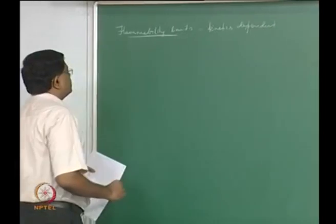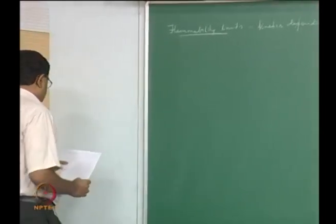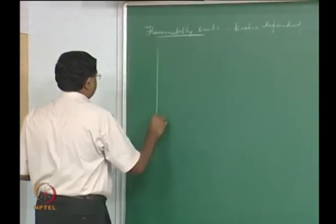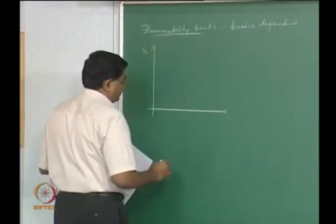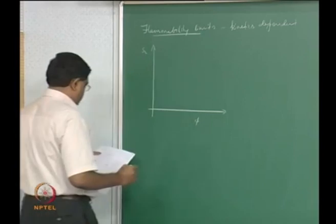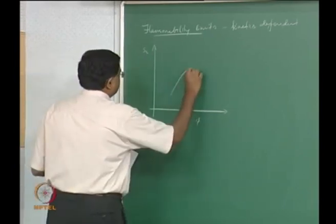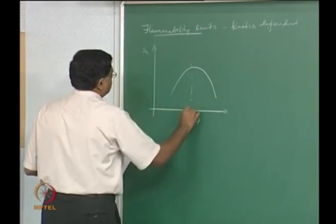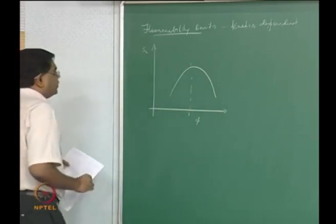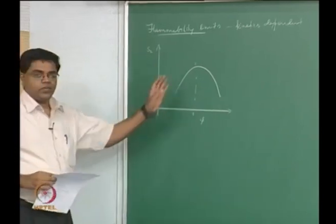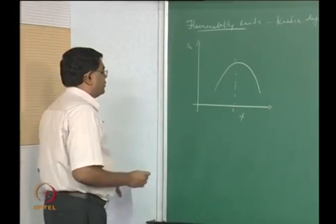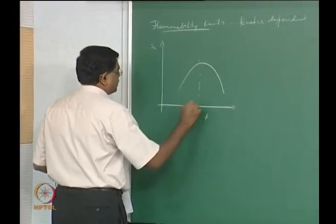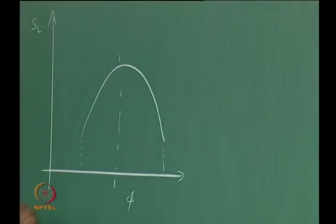As far as flammability limits are concerned, if you plot the laminar flame speed versus the equivalence ratio, you have a curve with a maximum somewhere in the middle, a little bit past equivalence ratio one, and then it falls down and stops at some point — meaning it does not go all the way down to zero.